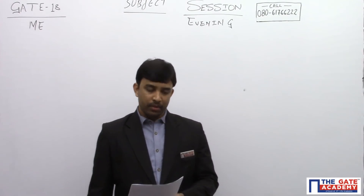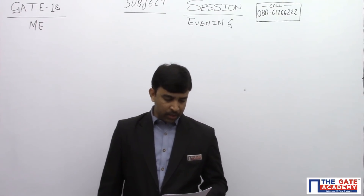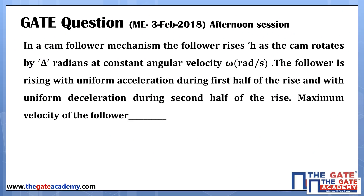Theory of Machine, Session 2, Mechanical Engineering. This question was asked for two marks. In a cam-follower mechanism, the follower raises h as the cam rotates by delta radians at a constant angular velocity omega. When the cam rotates by delta radians, the follower raises by distance h. The follower is rising with uniform acceleration during the first half of the raise and with uniform deceleration during the second half. The maximum velocity of the follower is to be found.